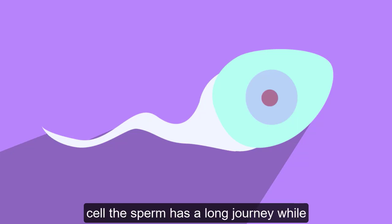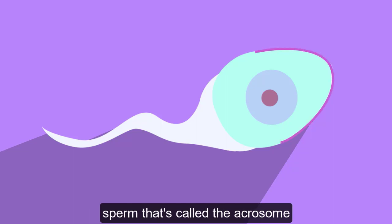The sperm has a long journey, while the egg cell doesn't move. You can also see the cap right at the top of the sperm. That's called the acrosome and contains special enzymes.